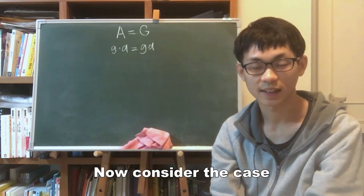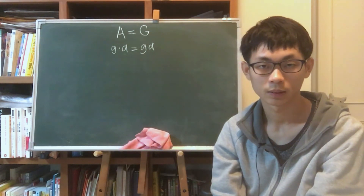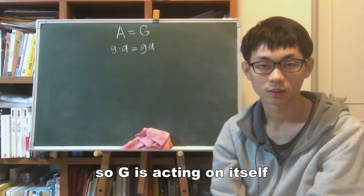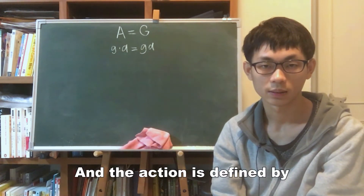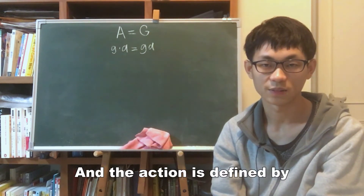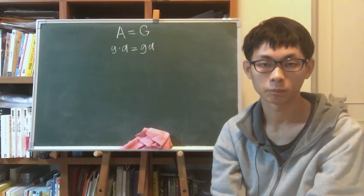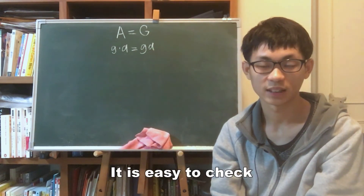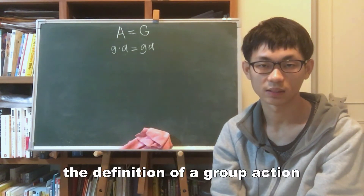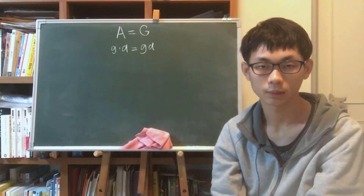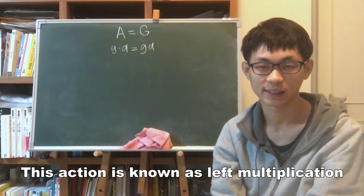Now consider the case where A equals G. So G is acting on itself and the action is defined by g · a = ga. It is easy to check that this satisfies the definition of a group action. This action is known as left multiplication.